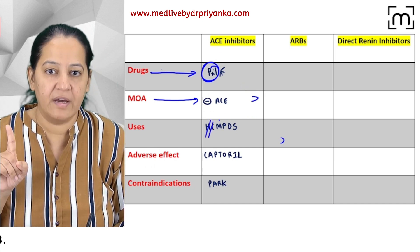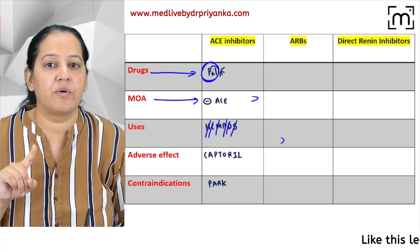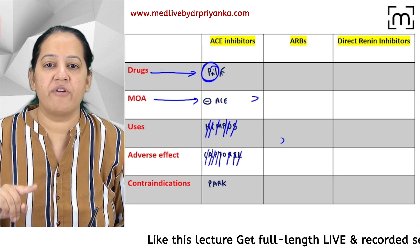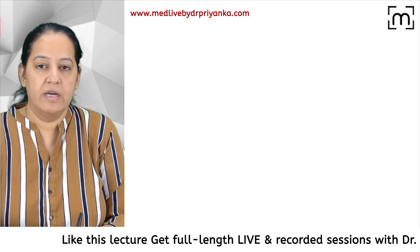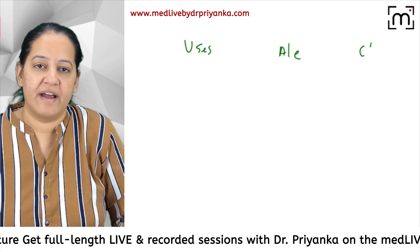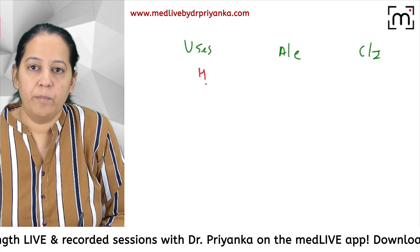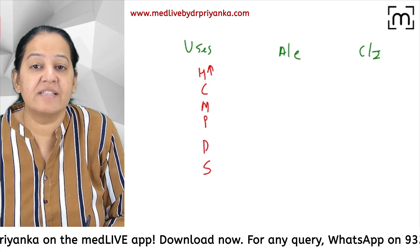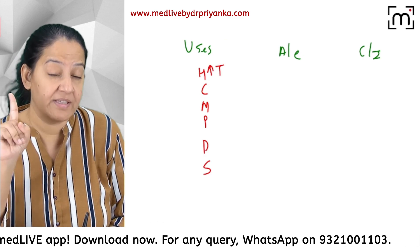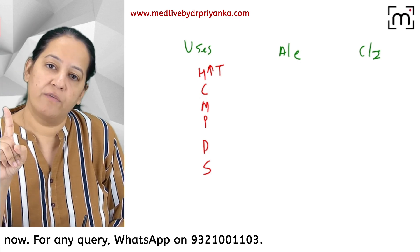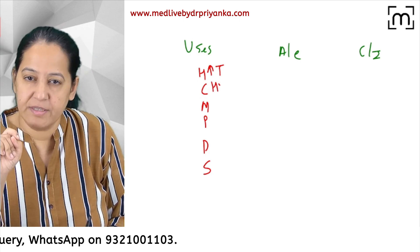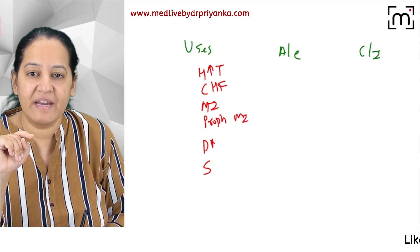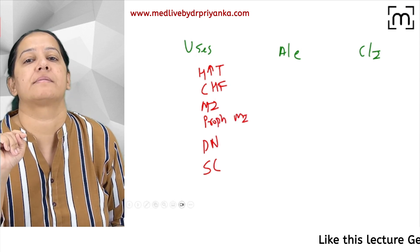The uses can be remembered with the mnemonic HOME CARE — it makes the patient definitely strong. Uses include: Hypertension (first-class drug), Congestive Heart Failure, MI and prophylaxis of MI, Diabetic Nephropathy, and Scleroderma Crisis.